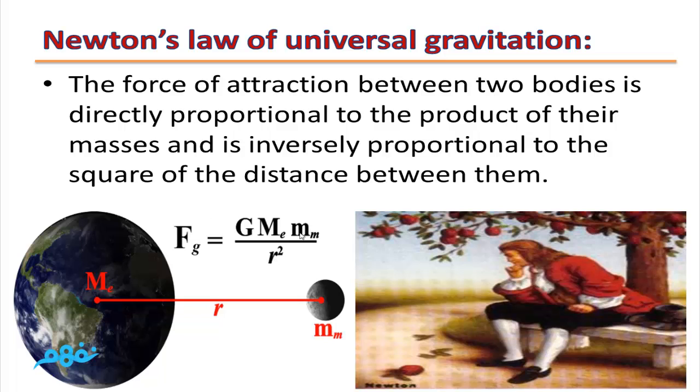As we can see here, the force of attraction between two objects like Earth and any object on it is directly proportional to the product of their masses, mass of Earth and mass of object, and is inversely proportional to the square of the distance between their centers.